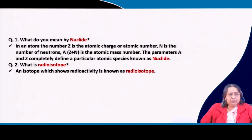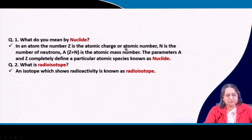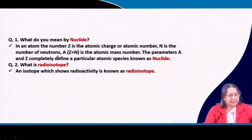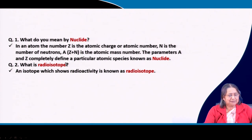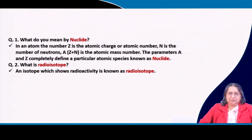A nuclide is defined by two parameters: Z, the atomic number, and A, the atomic mass number (where A = Z + N). These parameters completely define a particular atomic species. A radioisotope is an isotope that shows radioactivity — isotopes may or may not be radioactive, but radioisotopes are specifically those isotopes that are radioactive.